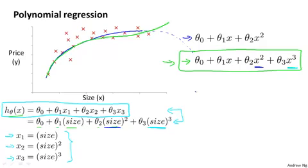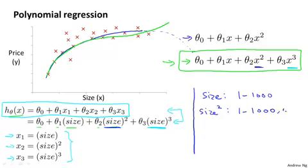I just want to point out one more thing, which is that if you choose your features like this, then feature scaling becomes increasingly important. So if the size of the house ranges from one to a thousand, from one to a thousand square feet, say, then the size squared of the house will range from one to one million, the square of a thousand. And your third feature x three, which is the size cubed of the house will range from one to ten to the nine. And so these three features take on very different ranges of values, and it's important to apply feature scaling if you're using gradient descent to get them into comparable ranges of values.